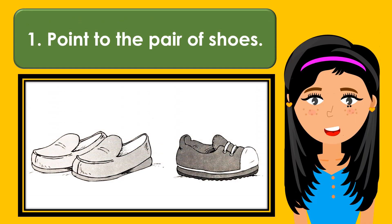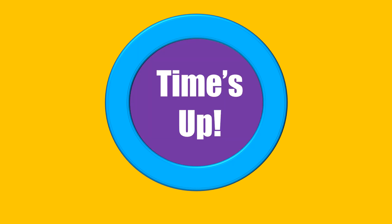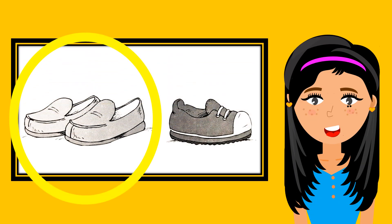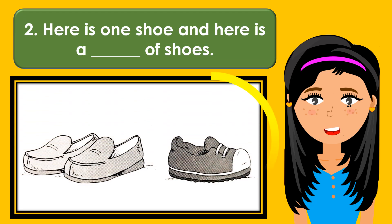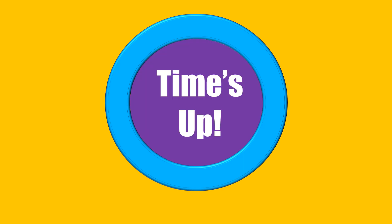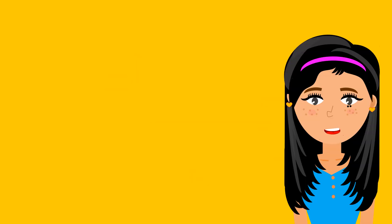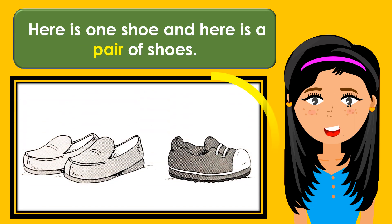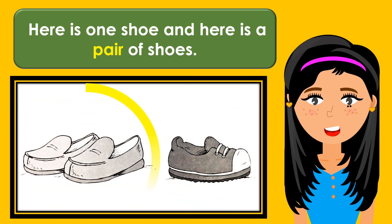Point to the pair of shoes. Here is one shoe. And here is a blank of shoes. The missing word is pair. Here is one shoe. And here is a pair of shoes.